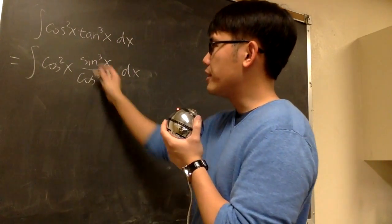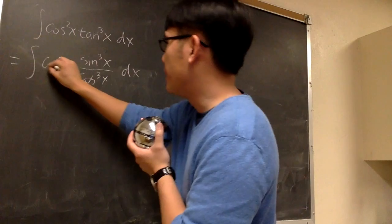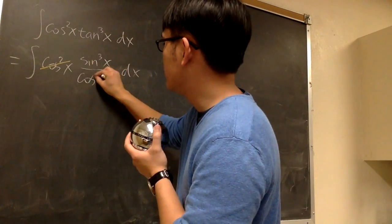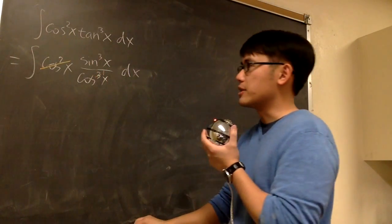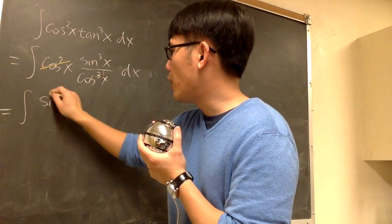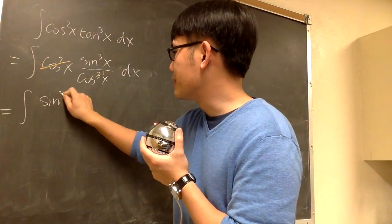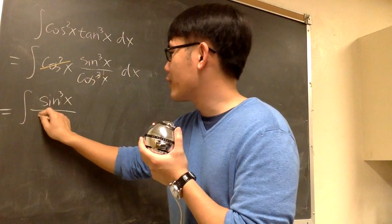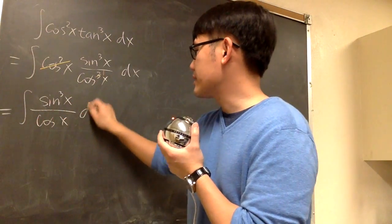And this way, everything will be in terms of sine and cosine. And even better, I can cancel two of these, so this becomes the first power on the bottom. In other words, this is the integral of sine to the third power x over cosine x dx.